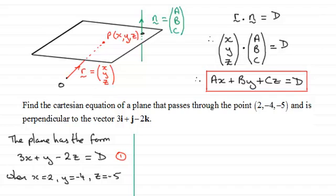And if we do that, what we therefore have is that 3 times the x value of 2 plus y, which is -4, minus 2 times z, which is -5, well that equals the constant d. And if you work that out, d turns out to be 12.